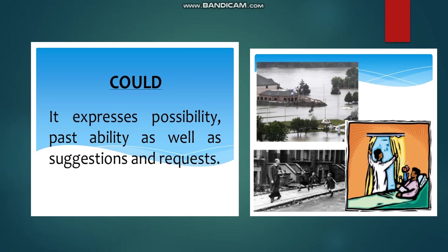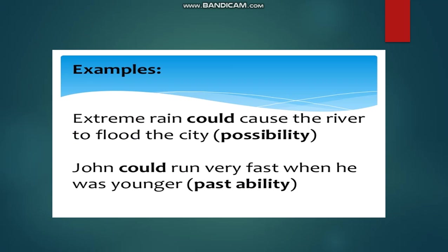The next modal is 'could.' It expresses possibility, past ability, as well as suggestions and requests. For example: 'Extreme rain could cause the river to flood the city' — that is possibility. 'John could run very fast when he was younger' — that is past ability, talking about John's ability in the past.